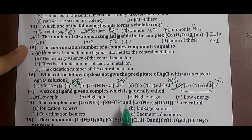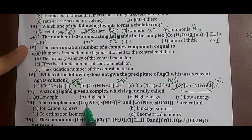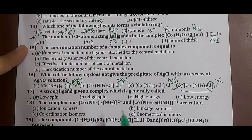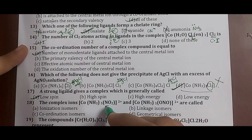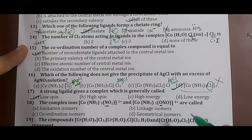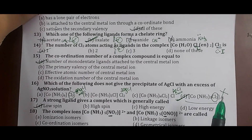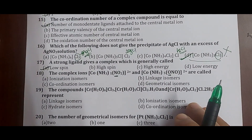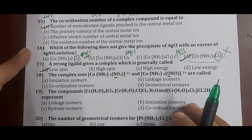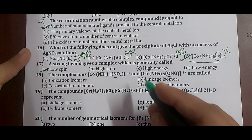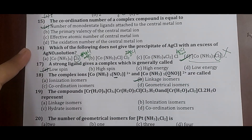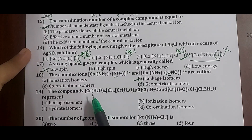Question 18: the complex ions [Co(NH3)5NO2]²⁺ and [Co(NH3)5ONO]²⁺ are called? They have the same molecular formula and same ligands, but the donor atoms differ — nitrogen in one and oxygen in the other. These are ambidentate ligand complexes called linkage isomers, and the phenomenon is linkage isomerism. Correct answer: option B.